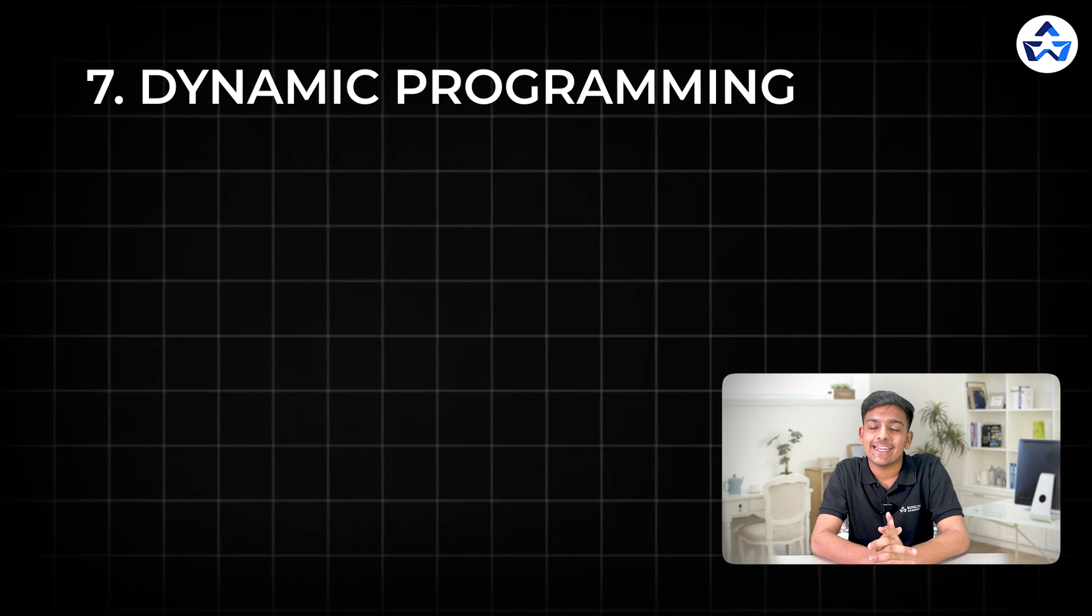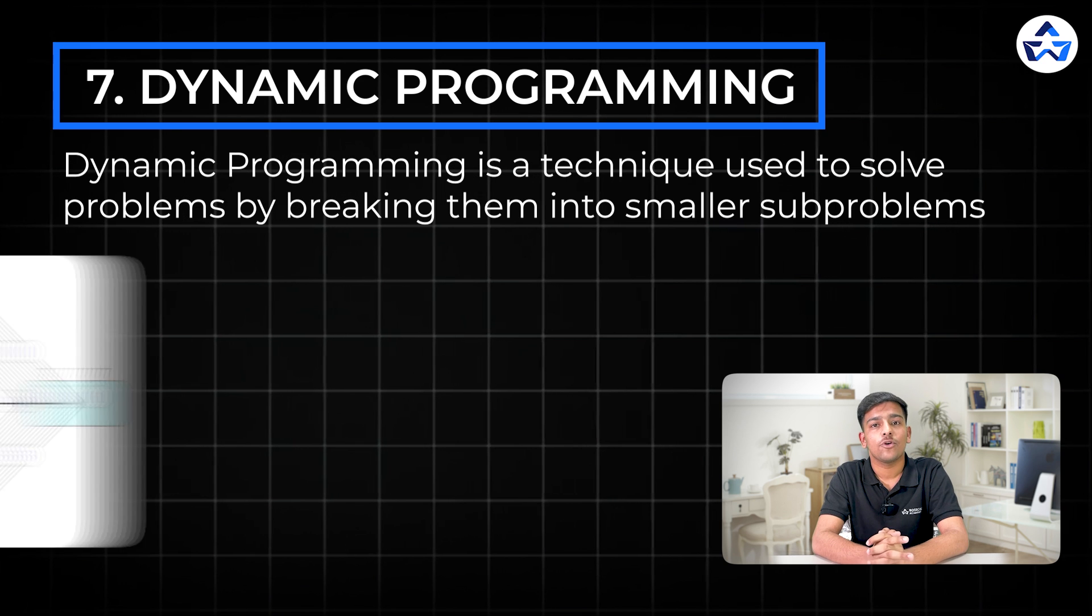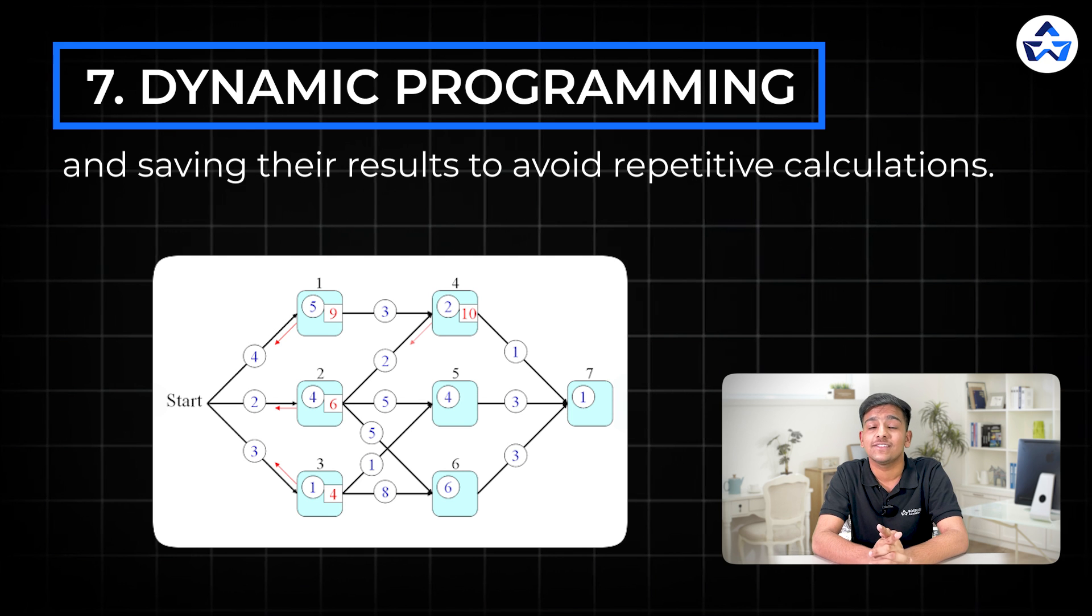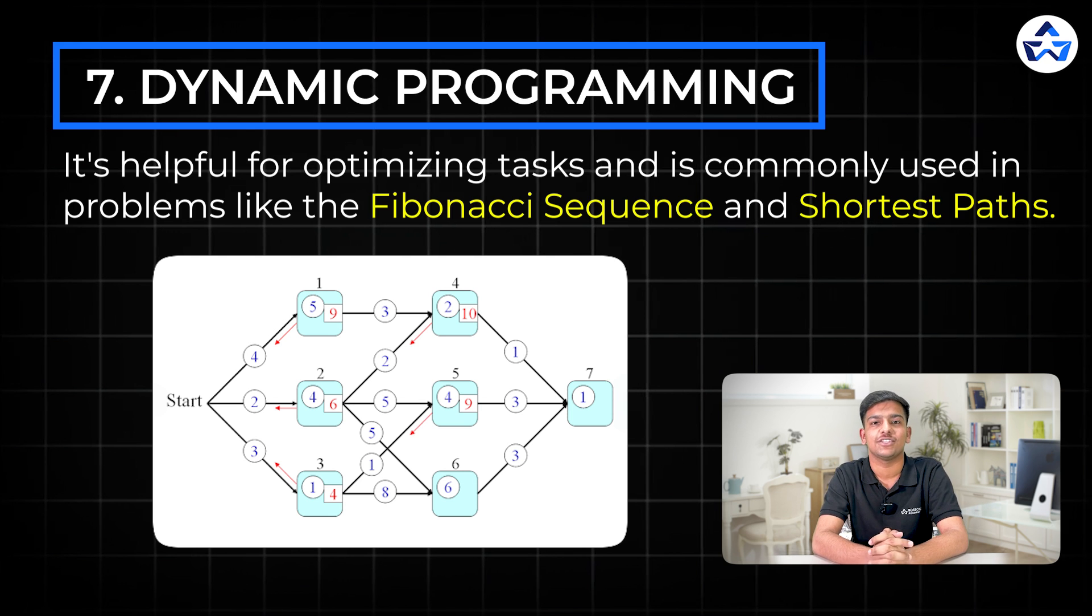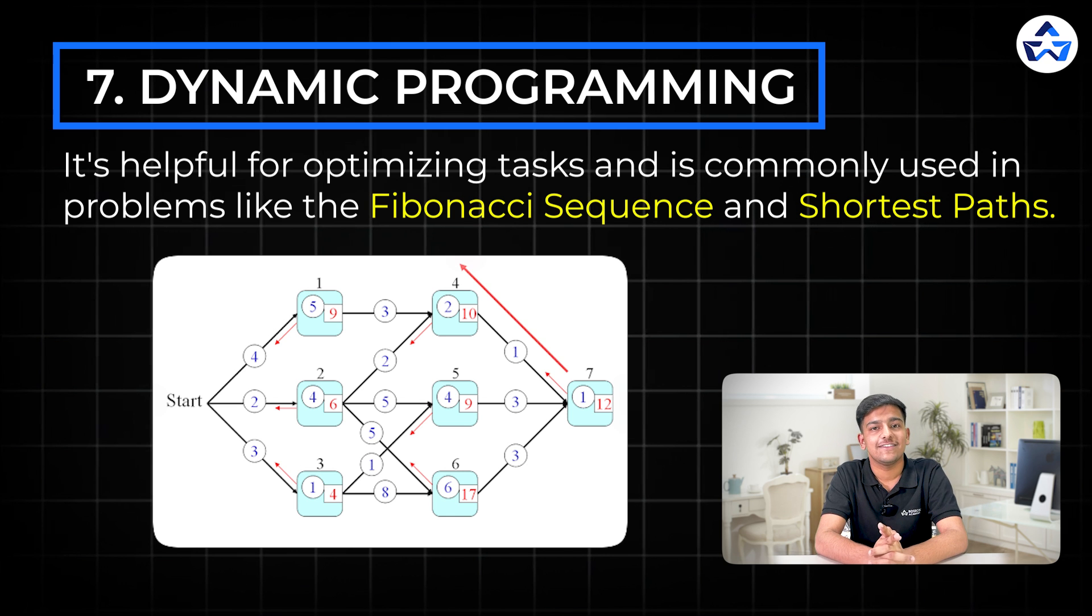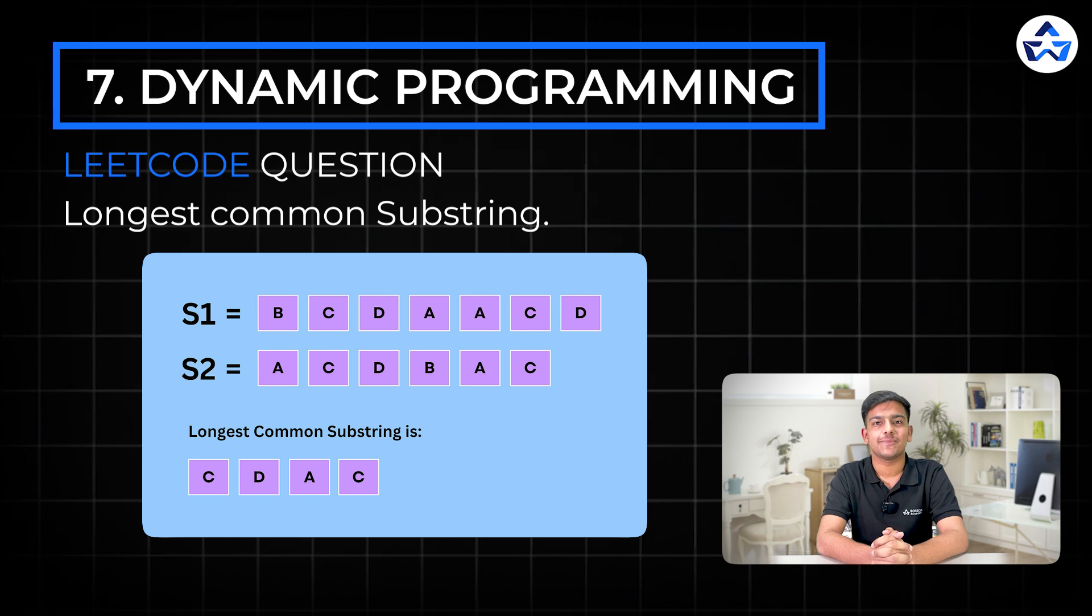So the seventh one is dynamic programming and it's one of the most challenging and rewarding patterns. Dynamic programming is a technique used to solve problems by breaking them down into sub problems and saving their results to avoid repetitive calculation. It's helpful for optimizing tasks and commonly used in problems like Fibonacci series and shortest path. So the related LeetCode questions are longest common subsequence.